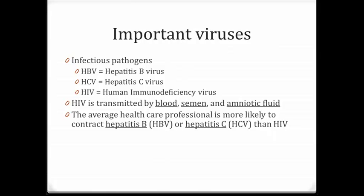HIV is transmitted by blood, semen, and amniotic fluid. Blood is the single most important source for HIV and hepatitis B in the occupational setting. The average healthcare professional is more likely to contract hepatitis B or hepatitis C than HIV. Hepatitis B can be present in extraordinarily high concentrations, while HIV is usually found in lower concentrations, hence less likely to contract.